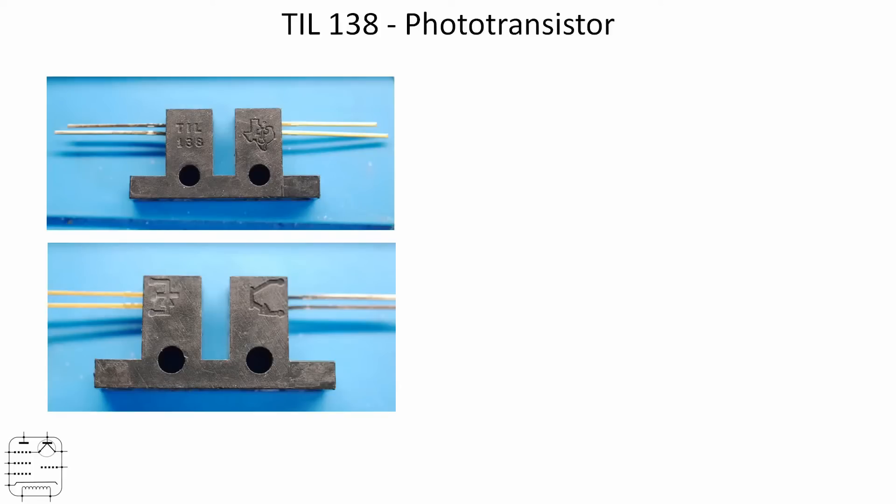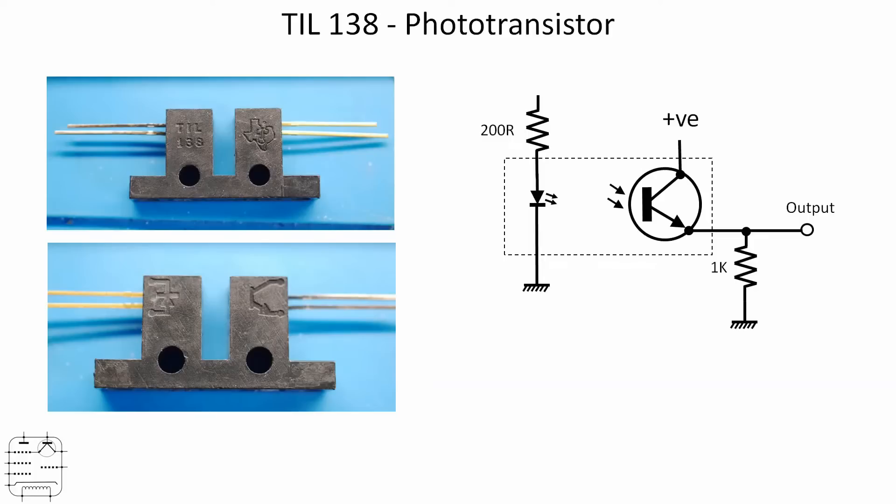The way the phototransistor works is that photons strike the transistor and that causes negative charge carriers to appear at the base, which is the equivalent of switching on the transistor, so it's optically activated.